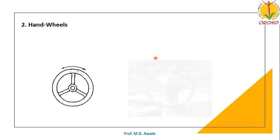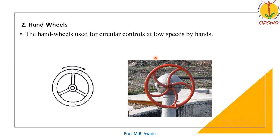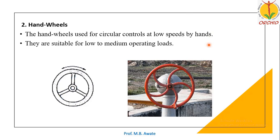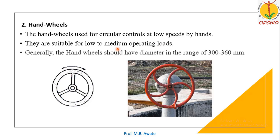Next is handwheels. Handwheels are used for circular controls at low speeds by hands. They are suitable for low to medium operating loads. The handwheels should have a diameter in the range of 300 mm to 360 mm, and these are used for low to medium duty applications.